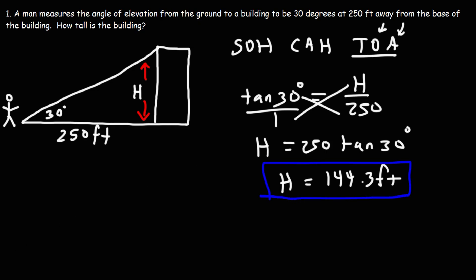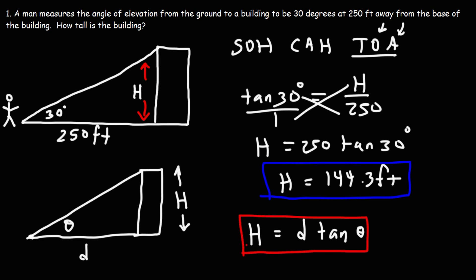Now for those of you who want a generic formula for situations like this, if you want to calculate the height of the building and you know the angle theta and the distance from which the angle is measured from the ground to the top of the building, the height of the building is simply the distance times tangent theta. That's all you got to do to find this answer.